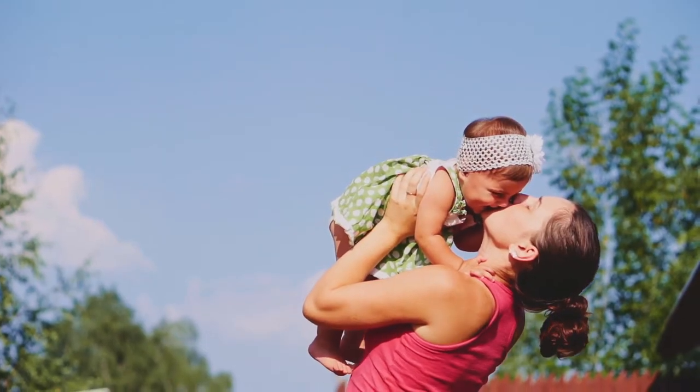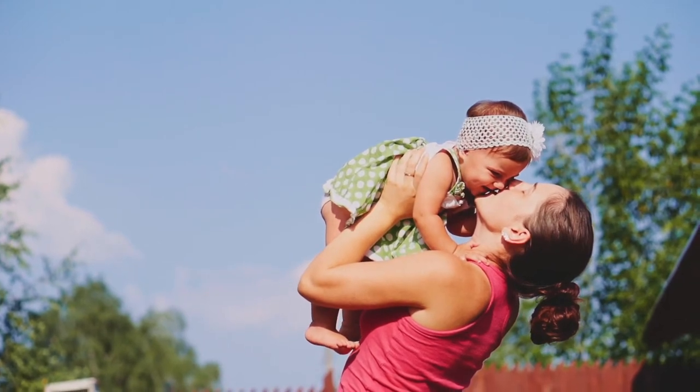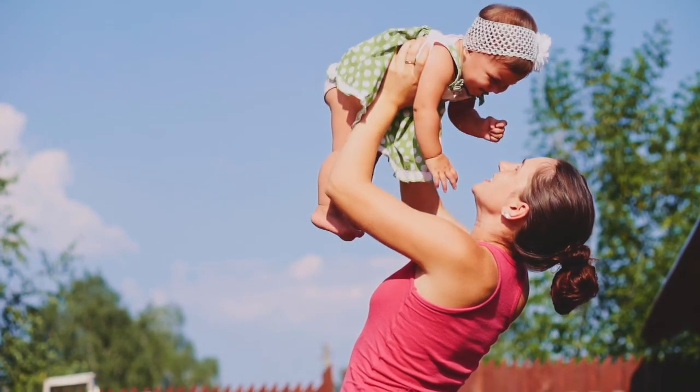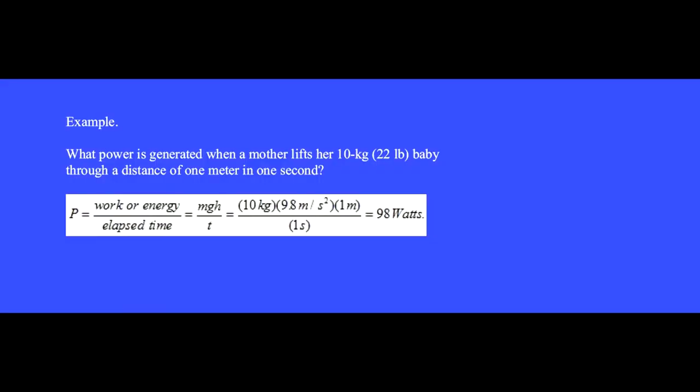What power is generated when a mother lifts her 10 kilogram or 22 pound baby through a distance of 1 meter in 1 second? Power equals work or energy divided by elapsed time. In this case the work is MGH, which is 10 kilograms times 9.8 meters per second squared times 1 meter divided by 1 second, equals 98 watts.